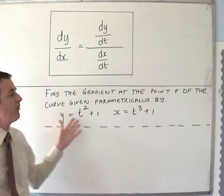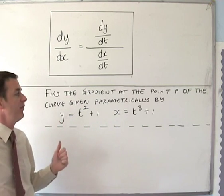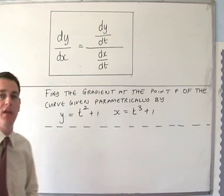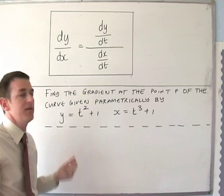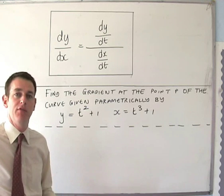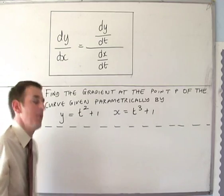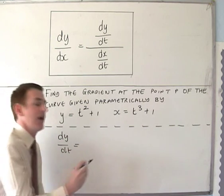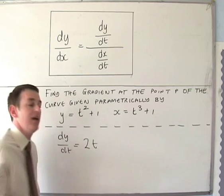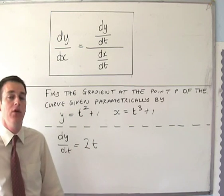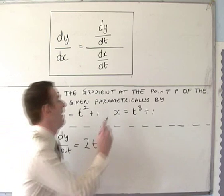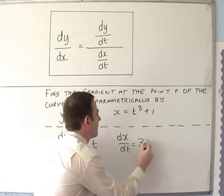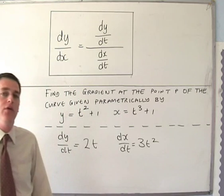Find the gradient at point P of the curve given parametrically by y equals t squared plus 1 and x equals t cubed plus 1. To start off we need to differentiate both of them with respect to t. dy/dt is equal to 2t, and dx/dt is equal to 3t squared.